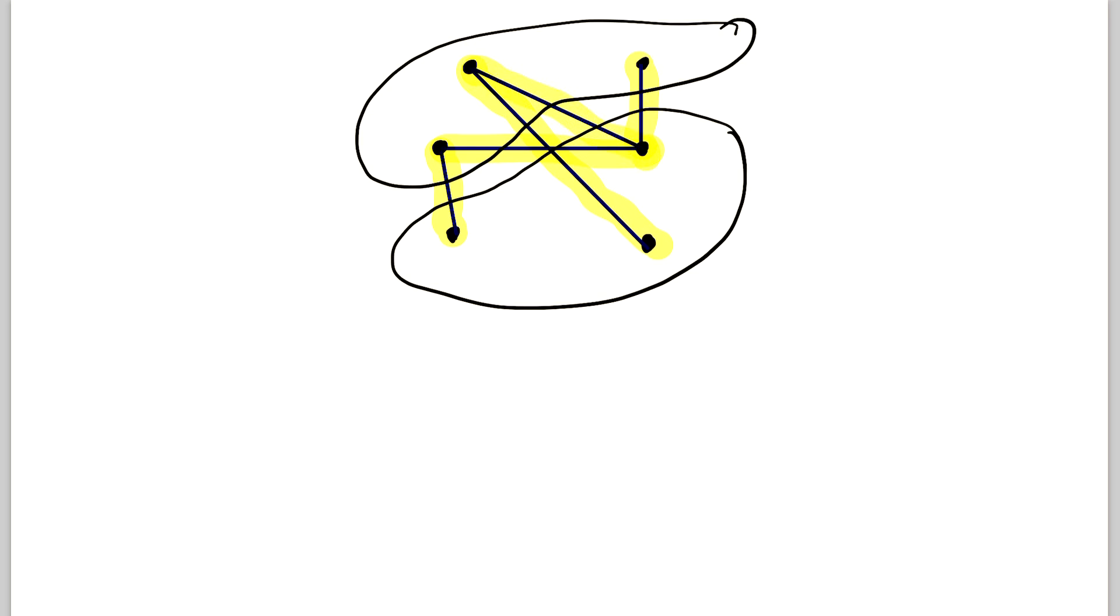So because we can partition the vertices in this way, where every edge goes from here to here, it is a bipartite graph. But let's look at an even less obvious one.